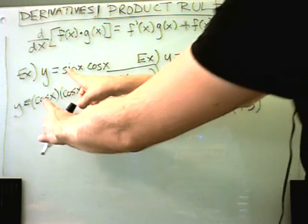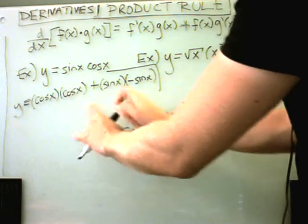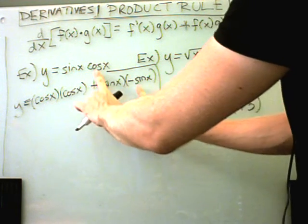So I took the derivative of sine and got cosine. I left the original cosine alone. I put a plus in between. I left sine alone. And then I took the derivative of cosine.